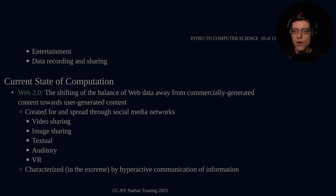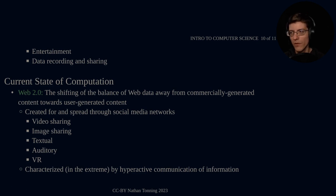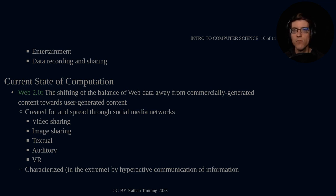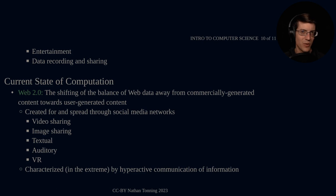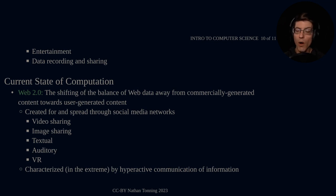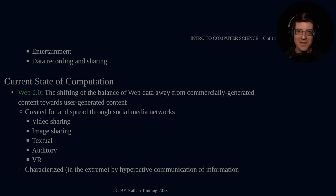This information is created for and spread through social media networks. Video sharing: YouTube, TikTok, Rumble, Twitter, Facebook, Instagram — plus specialized video sharing platforms. Image sharing: Instagram and many others — not just photographs but also art. And we see the horizon of AI art being created on the web in an AI fashion.